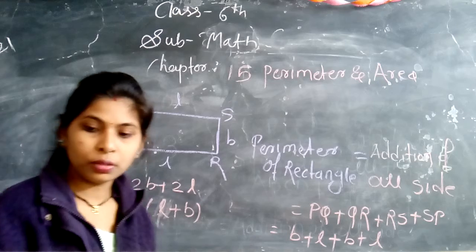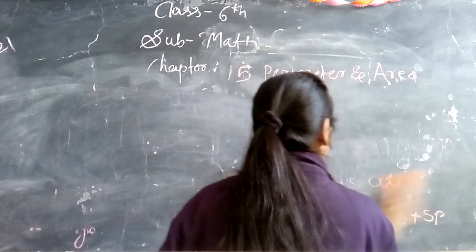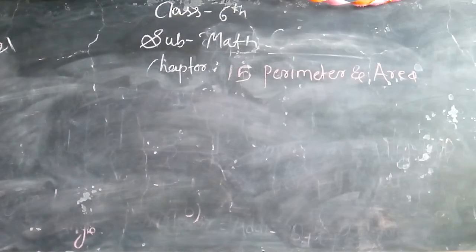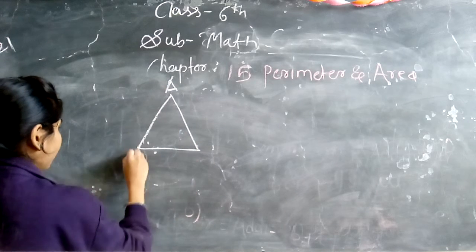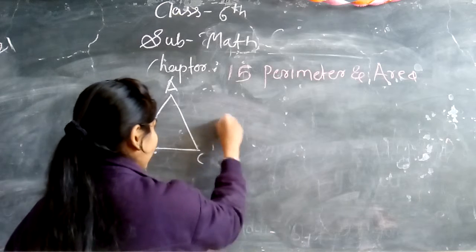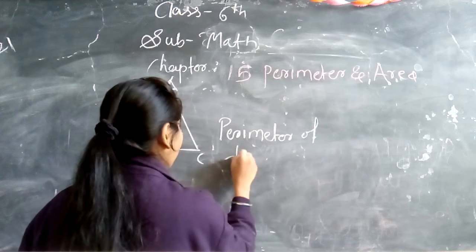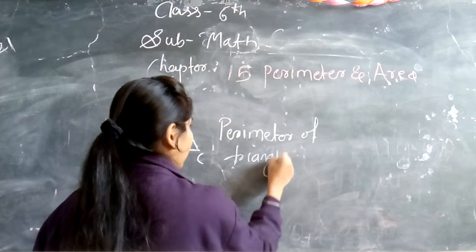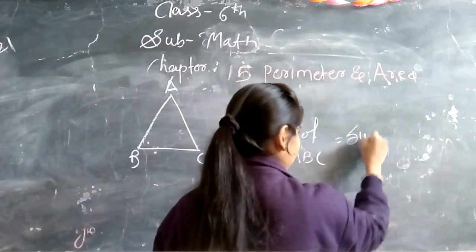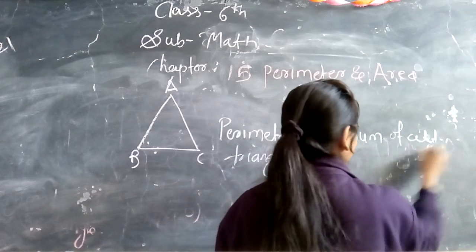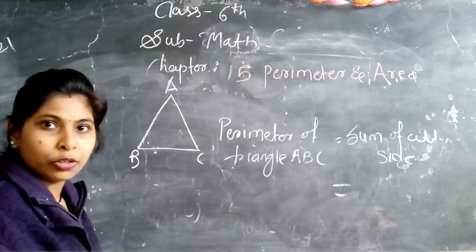Okay students, so now we can discuss the perimeter of triangle. We have a triangle ABC. What is the perimeter of triangle ABC? We calculate the perimeter of triangle.